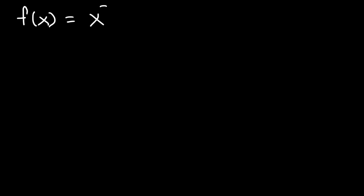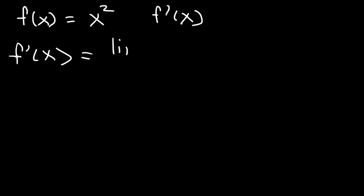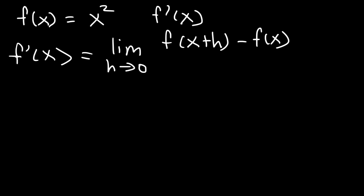Now let's try another example. So let's say if f of x is equal to x squared — what is the first derivative of the function? Go ahead and use the definition of the derivative to find f prime of x. So first let's use the formula: f prime of x is equal to the limit as h approaches 0 of f of x plus h minus f of x divided by h.